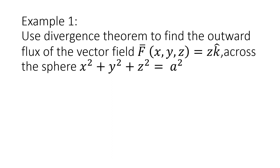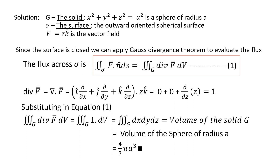Let us discuss an example. Example 1: Use the Divergence theorem to find the outward flux of the vector field F = zk across the sphere x² + y² + z² = a². Here the given solid G is the sphere x² + y² + z² = a², a sphere of radius a, and the surface sigma is the outward-oriented spherical surface. The vector field F is given as zk.